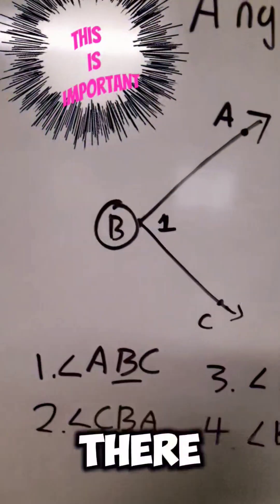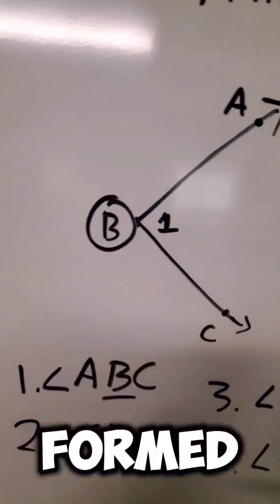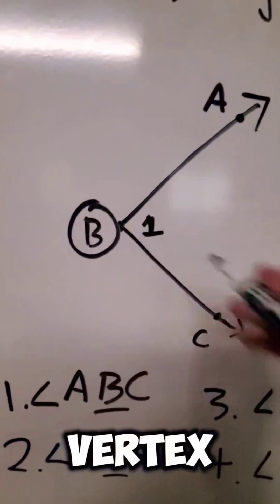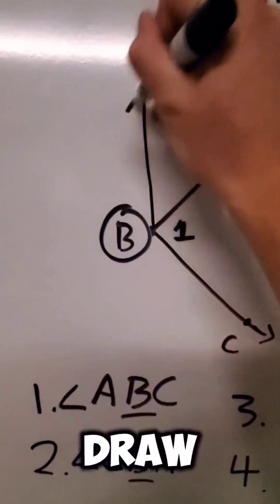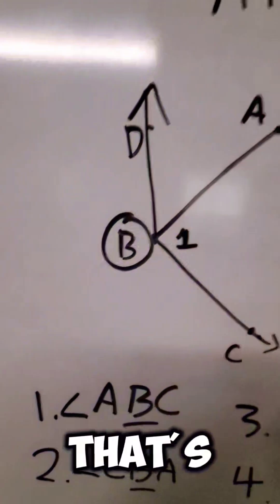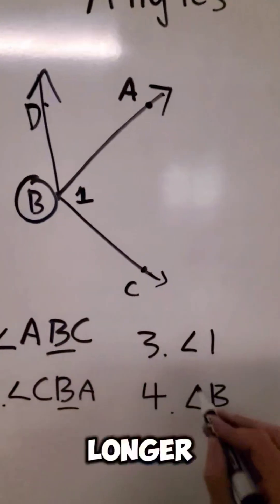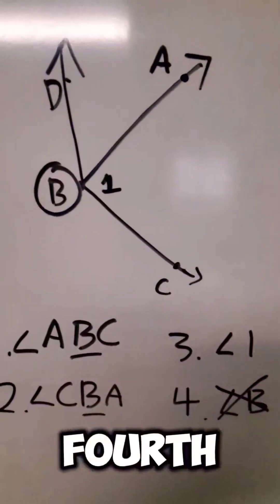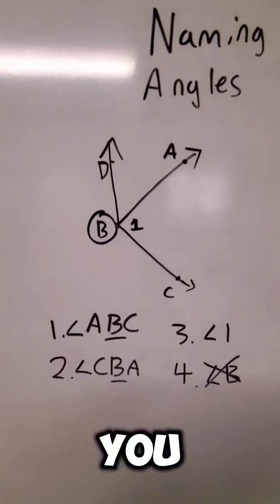However, if there are more than one angles formed by this vertex, say if I were to draw another right up there and that's D, we can no longer use that fourth method. That is how you name angles.